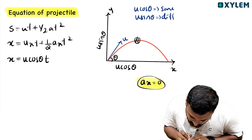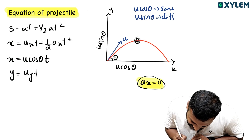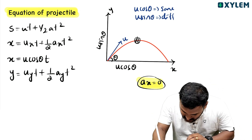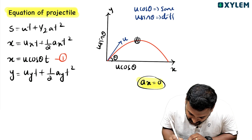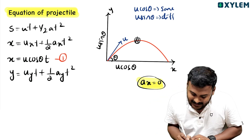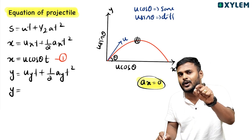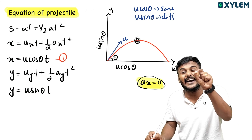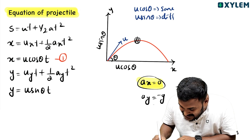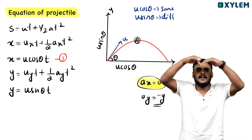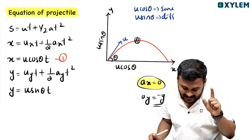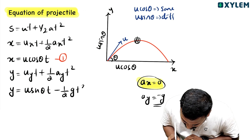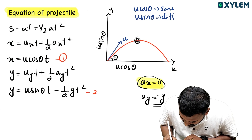For the y-component: y equals uᵧt plus half aᵧt squared. The y-component of velocity is u sinθ, so y equals u sinθ into t. Acceleration in the y-direction is aᵧ equals minus g, because the downward direction is negative. So y equals u sinθ · t minus half g t squared. This is equation number 2.